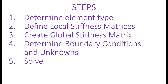The steps to solve this problem are: determine element type, which was done previously; each element has its own local stiffness matrix; create the global stiffness matrix from the local stiffness matrices; define the boundary conditions and unknown values; and finally solve the equations. The derivation of the local stiffness matrix is not shown in this video — only how to apply the equations and matrices in MATLAB.